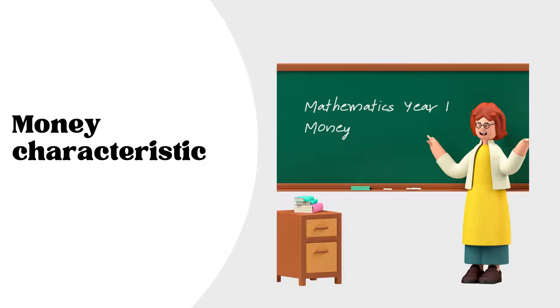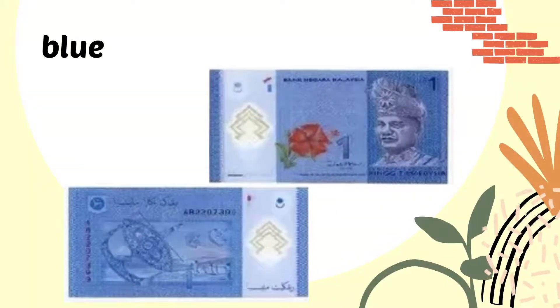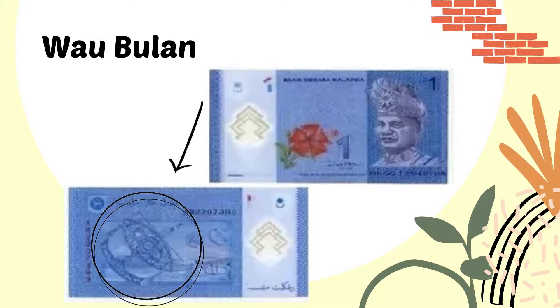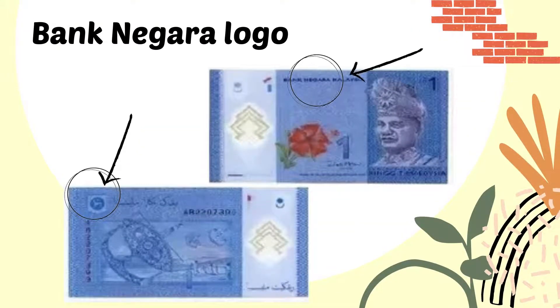Now we're going to look at money characteristics. Let's have a look at this picture. Can you tell me what color this is? Yes, it is blue in color. It has number 1. It has a hibiscus. It has wau bulan. And it also has the Bank Negara logo.